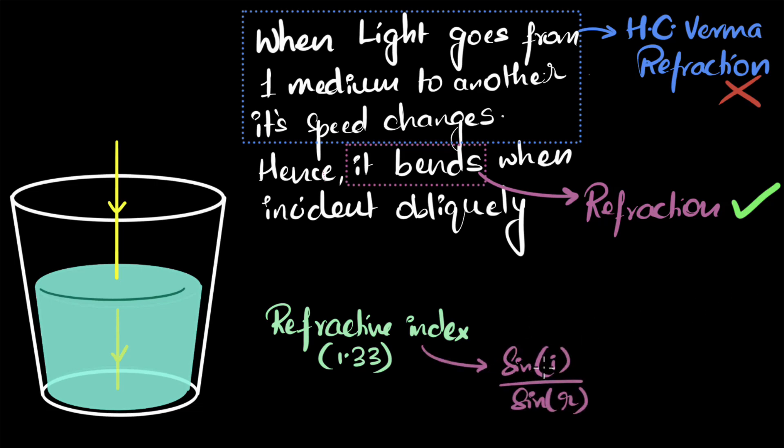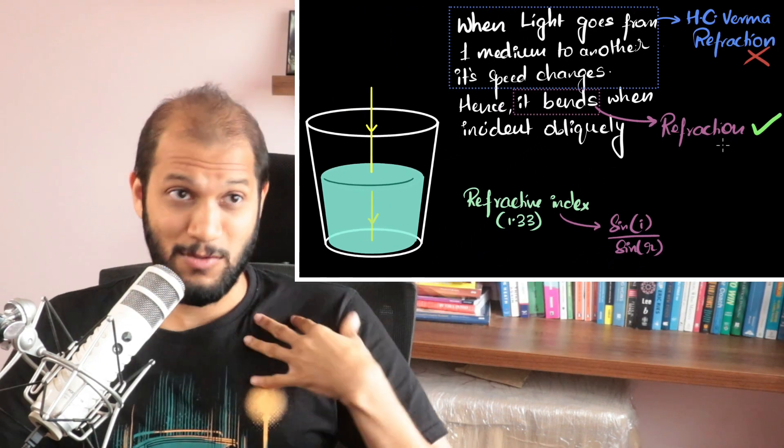from Snell's law is the ratio of sine I by sine R. So if refractive index, for example, was one, it means I and R are equal to each other. No bending is happening. The more the refractive index values, the more it is bending. So literally the number is talking about how much it is bending. That's what I would say.